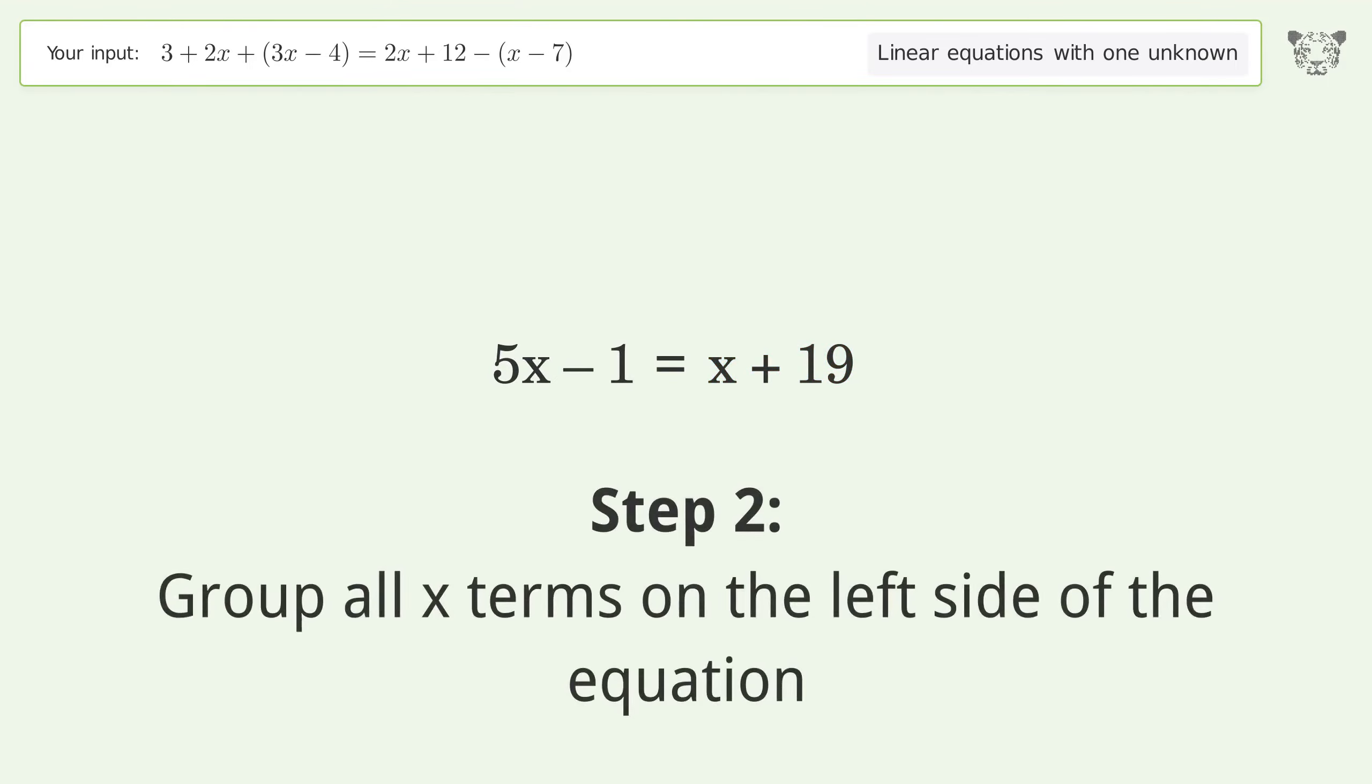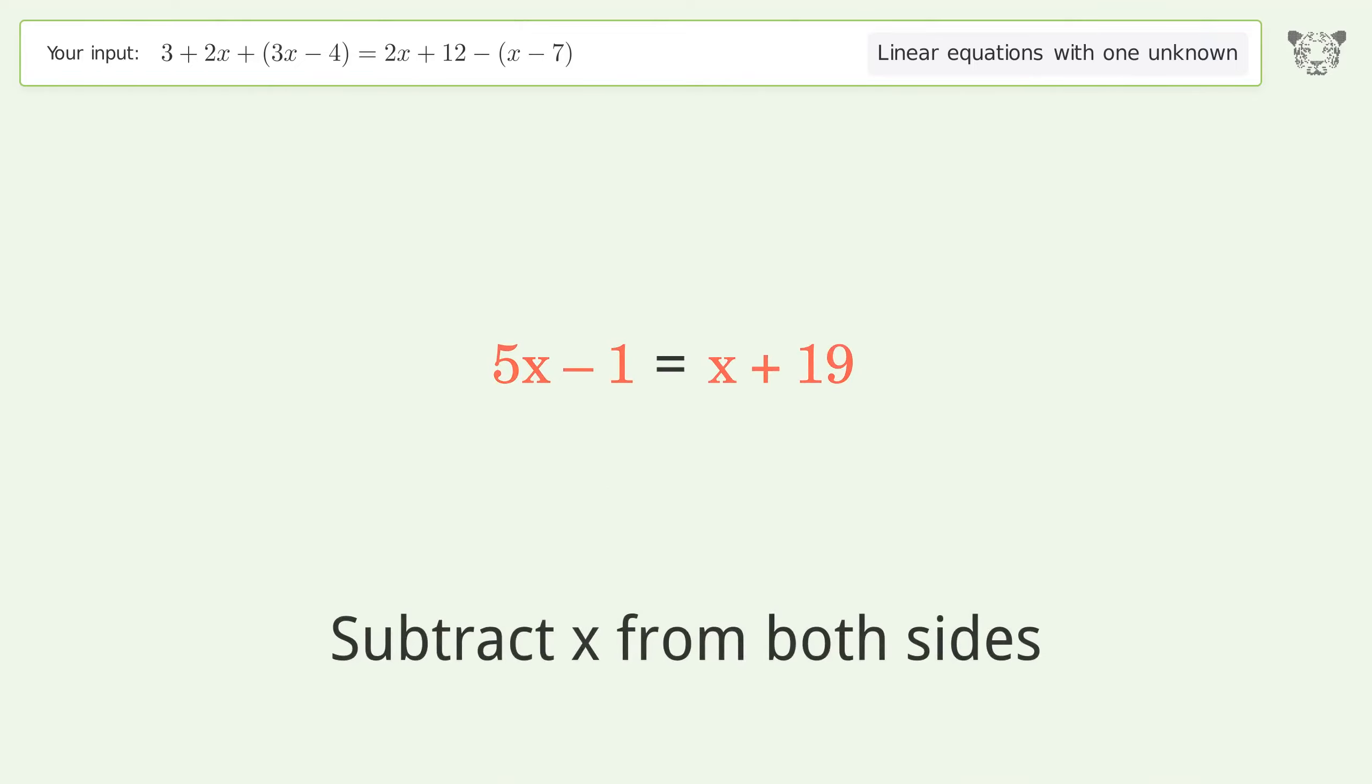Group all x terms on the left side of the equation. Subtract x from both sides. Group like terms, simplify the arithmetic.